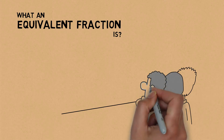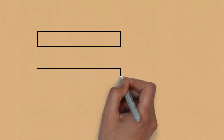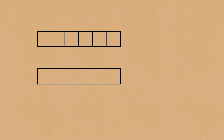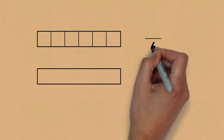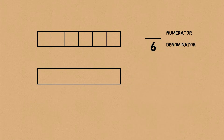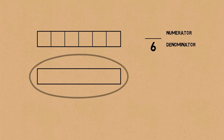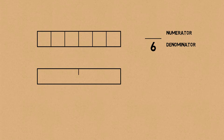Let's look at what an equivalent fraction is. I would like to use these two bar models. The first bar model has been split up into six parts, so the denominator of this bar model would be six. And this bar model here has been split up into two parts, so the denominator of this bar model would be two.